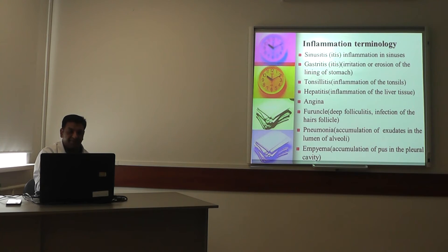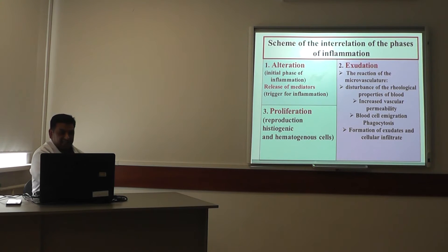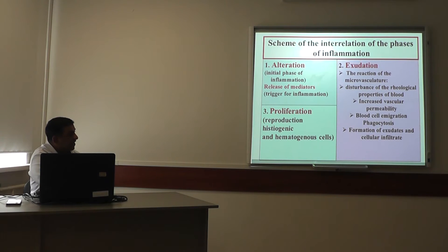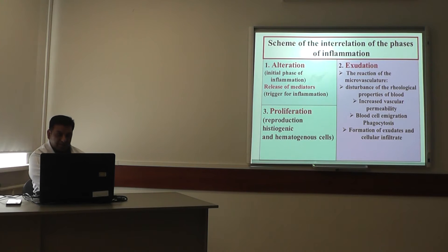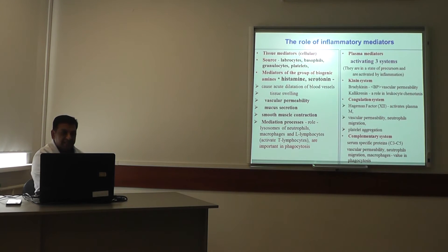The scheme of interrelation of the phases of inflammation: there are three phases — alteration, exudation, and proliferation. Alteration is the initial phase of inflammation with release of mediators that trigger inflammation. Exudation involves the reaction of the microvascular bed: first, disturbance of the rheological properties of blood; then increased vascular permeability; followed by blood cell immigration, phagocytosis, and formation of exudates and cellular infiltrations. The third phase, proliferation, is the reproduction of histogenic and hematogenous cells.